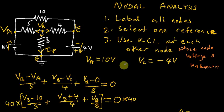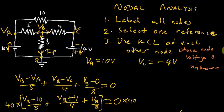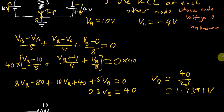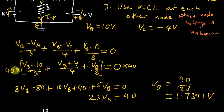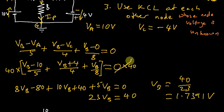Hello again. In the last video, I said we should go ahead and find VB. I've taken the liberty to solve that here and will walk through the procedure. What I did was to multiply both sides — I found the LCM of 5, 4, and 8, which is 40, and multiplied the left and right-hand sides by 40. The right-hand side is obviously still equal to 0.